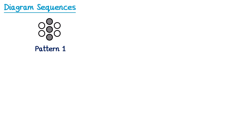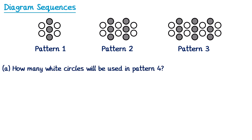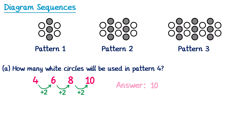Sometimes we have slightly more complicated patterns. In this pattern, we have two different types of circles — white circles and grey circles — across patterns 1, 2 and 3. The first part asks how many white circles are used in pattern 4. Counting the white circles: pattern 1 has 4, pattern 2 has 6, and pattern 3 has 8. To get from 4 to 6 we add 2, and from 6 to 8 we also add 2. So for pattern 4 we add 2 to 8, giving 10 white circles.